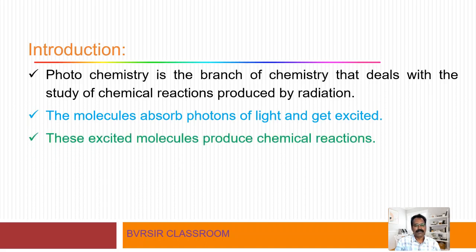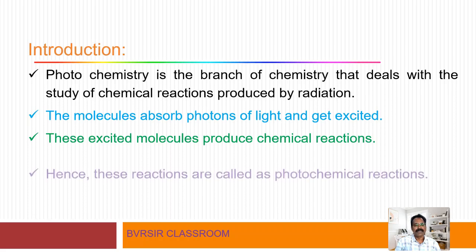These excited molecules produce chemical reactions. Overall, when a substance absorbs light, the molecules or atoms enter an excited state. In that excited state, these species react and finally give products. These are chemical reactions, and this type of chemical reaction is called a photochemical reaction.